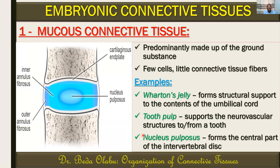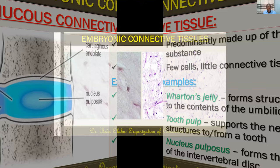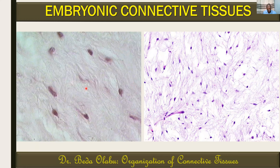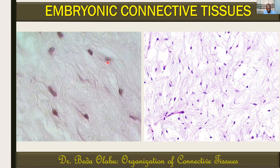Remember therefore that tooth pulp and nucleus pulposus are actually present in adults — only Wharton's jelly would be reserved for prenatal life. Comparing the two types: the mucous tissue has very few cells and a lot of matrix, while the mesenchymal tissue on the right shows a probably increased number of cells, fibers that may have slightly increased as well, with ground substance still abundant.